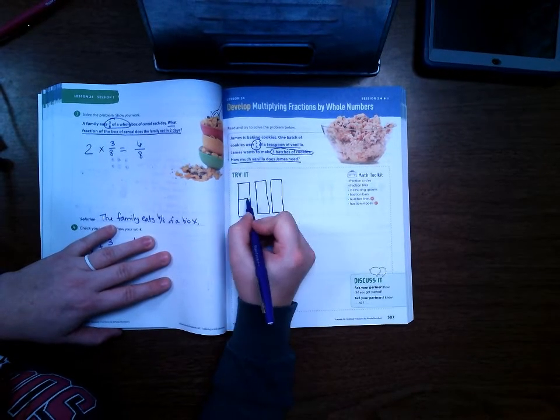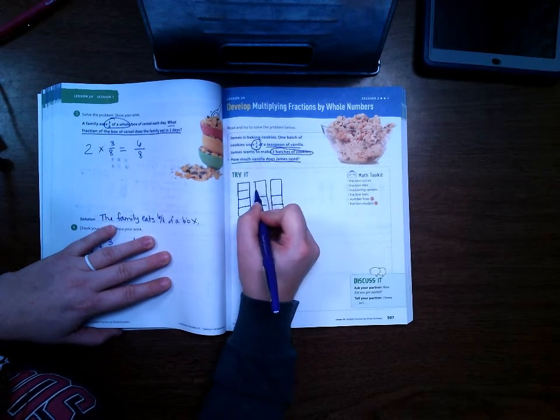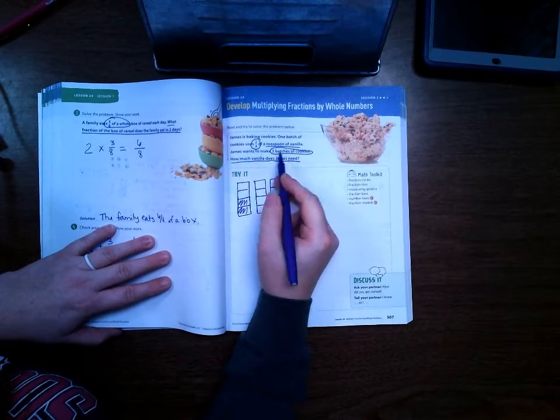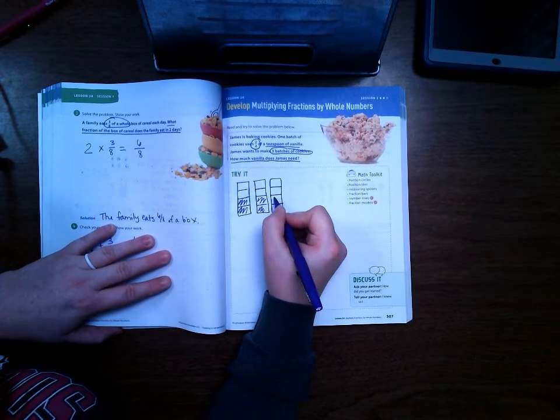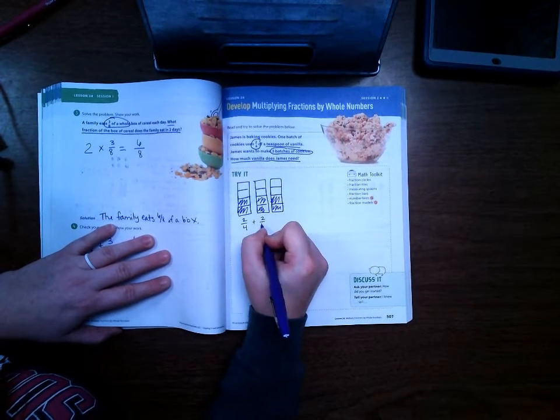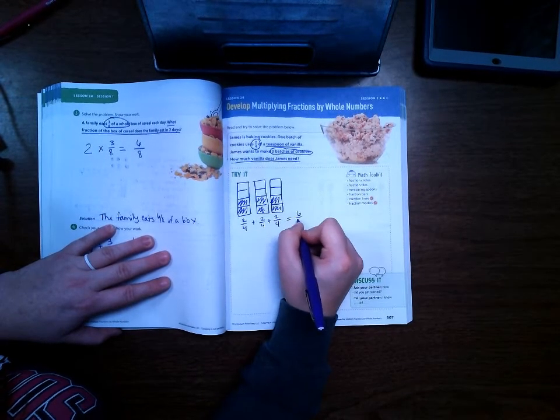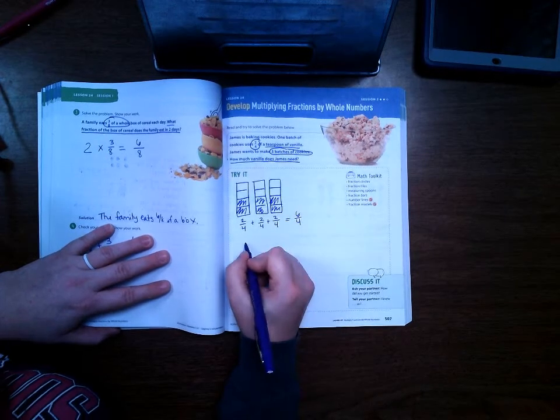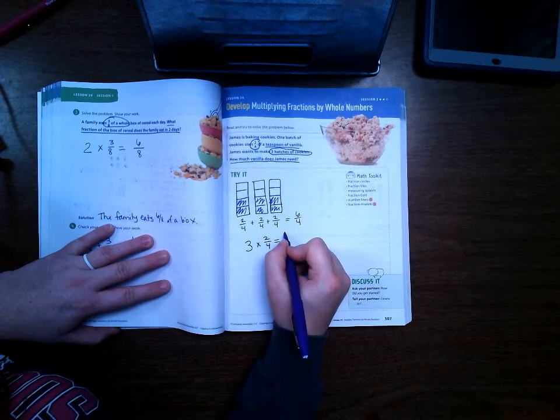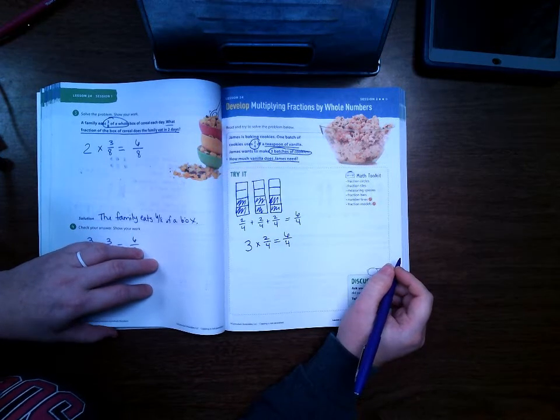Since this is fourths, I'm going to divide these into fourths. Each batch uses two-fourths and I'm making three batches so that's why I drew three bar models. I have two-fourths plus two-fourths plus two-fourths which equals six-fourths. Another way that you could do this is three times two-fourths. Three times two is six and you put your four on the bottom.